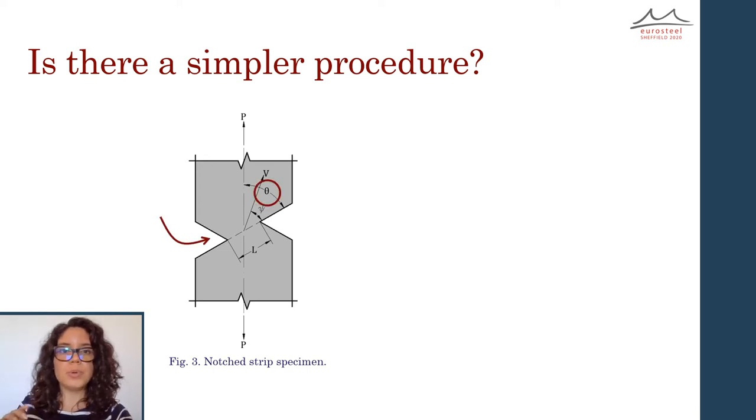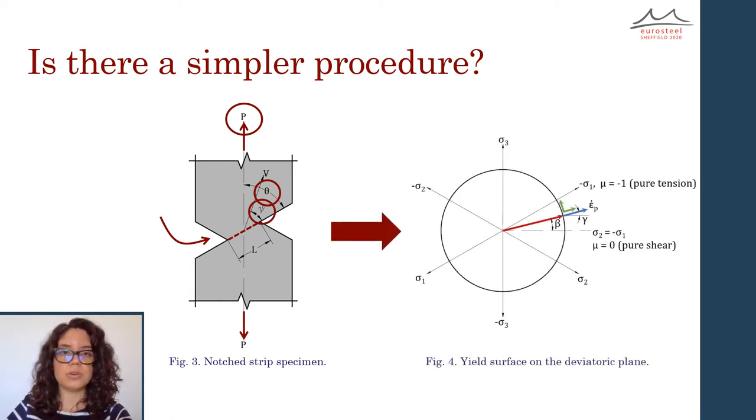By giving this weak net neck a certain angle, theta, and pulling the strip in uniaxial tension, yielding is forced to occur simultaneously in shear and tension along the neck. If the load P at which yielding starts and the angle of relative velocity, psi, are measured, it is possible to plot the yield locus using any known yield criterion.